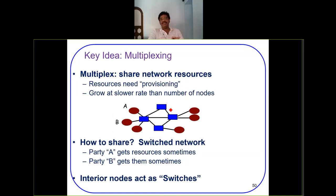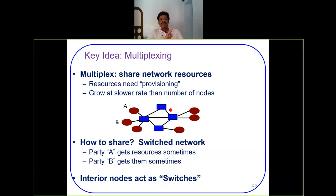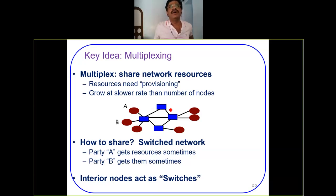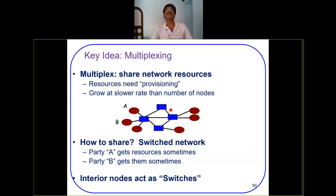In mesh topology, every terminal is connected with every other terminal, providing very high reliability but making the network more complicated. Sharing network resources is a critical task for a network designer to provide optimal connectivity to every node. Even as the number of devices grows, all devices can be accommodated using multiplexing in the data network, which gave rise to different designs of networking devices.